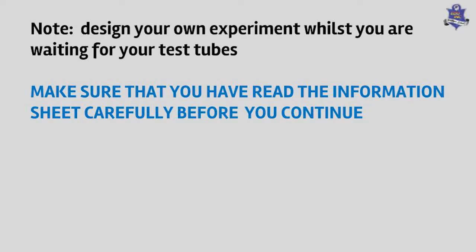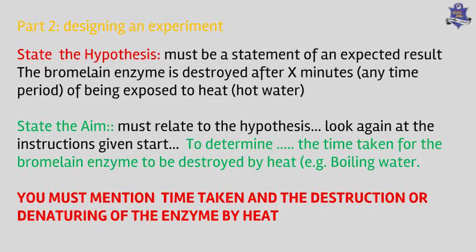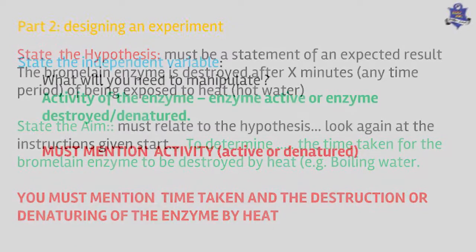Now you're going to design your own experiment. I'll go through the method with you and then you will write it up in your own words. First, you have to state a hypothesis. A hypothesis is a statement: 'If I do this, then this will happen.' In this particular experiment, you would say the bromelain enzyme is destroyed after a certain number of minutes of being exposed to heat or hot water. Decide whether you are going to heat the pineapple or put it into boiling water, then write down your hypothesis.